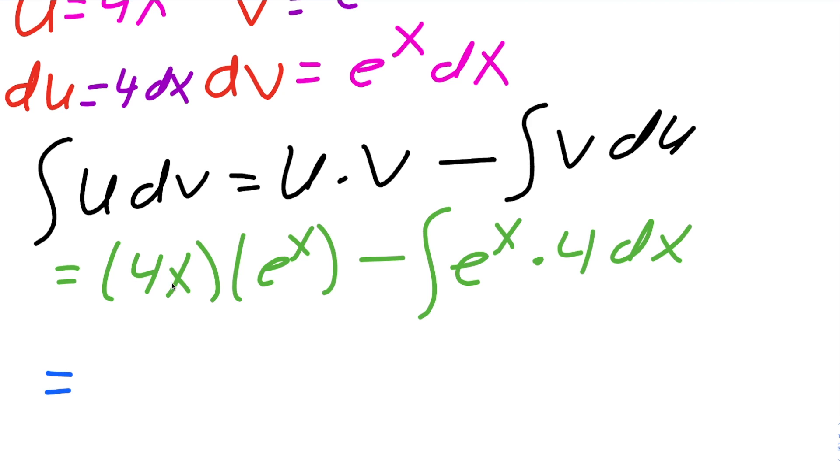So let's continue. So 4x e raised to x for this piece right here, the integral of e raised to x is e raised to x, so we'll get negative 4 e raised to x, plus c.